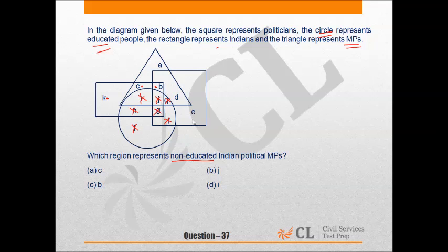Now political MPs. In the question, square represents politicians, so it should be under the square. So C and K should not be our answer. Hence our answer is B, that is given in answer option C. Hence our answer is option C.